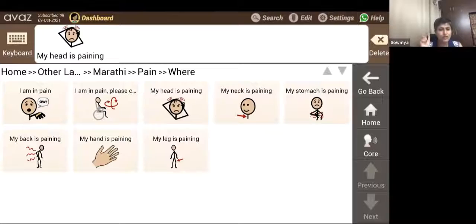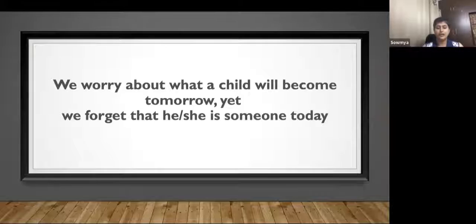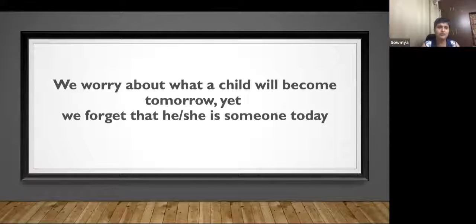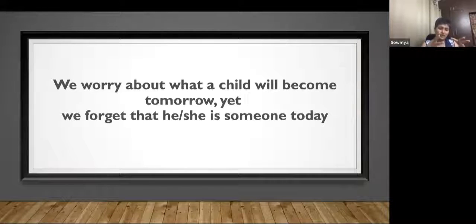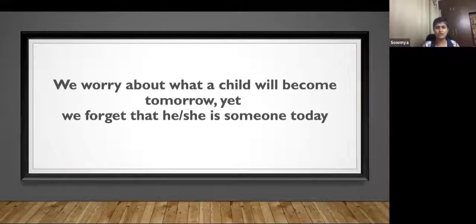Using words to explain what helped — like 'now I get it,' 'you helped me understand' — because then we want the child to think, 'Oh, this is what I did well — maybe I want to try it again.' This is a quote I really like and use very often: 'We worry about what a child will become tomorrow.' We all have goals — I want him to achieve this, I want him to be at this level. But we tend to forget that he or she is someone today. So enjoy the current moment where you are right now with your child.